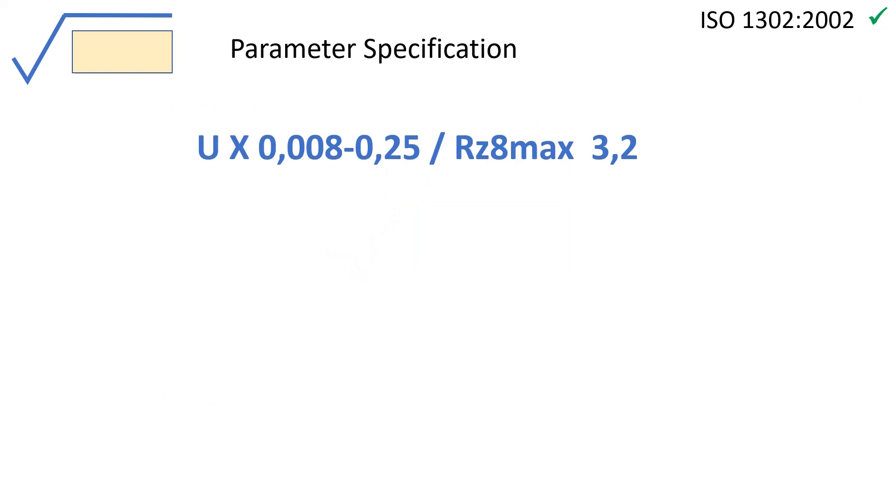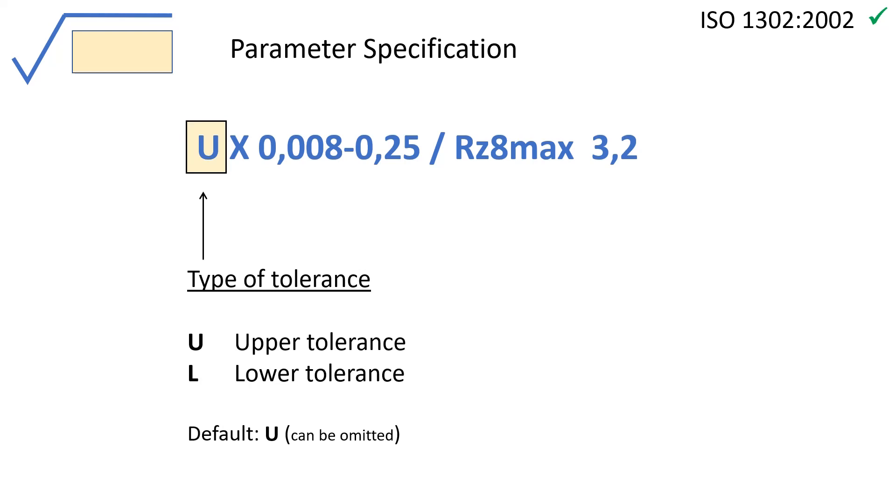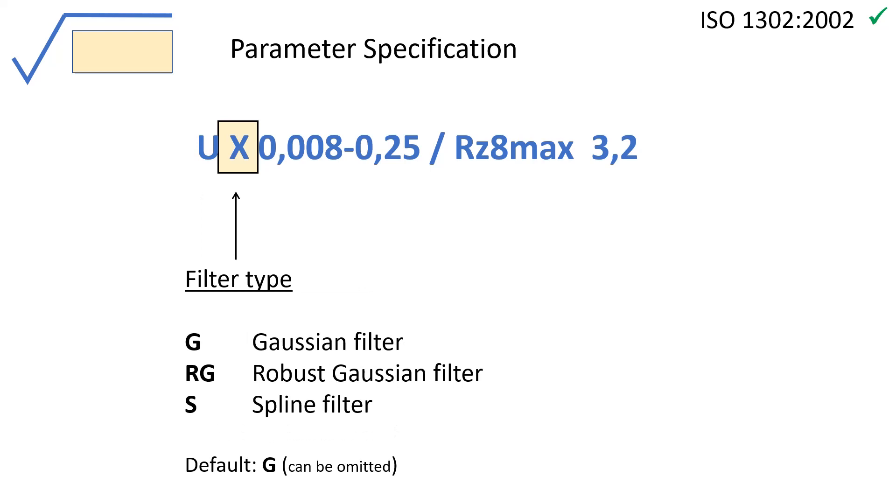Now we will study in detail how to write all these indications. The specification string below the root symbol contains several terms. Some of them are implicit and can be omitted when they correspond to the default value. The first term is the type of tolerance. Is the limit an upper or lower limit? If this term is omitted, it means that the limit is an upper limit, symbol U. The second term defines the filter type. Usually the Gaussian filter is used for most roughness parameters. Several letters are defined for the different filter types.